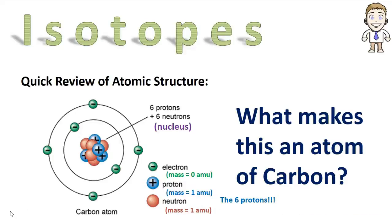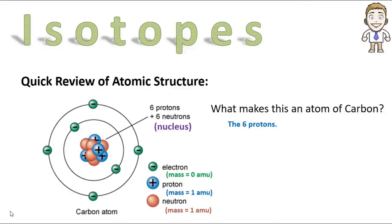The answer to that question is, it's actually the six protons that makes this atom an element of carbon. That means any atom with six protons, regardless of how many neutrons or electrons, will still be carbon.